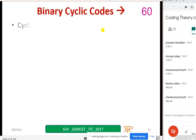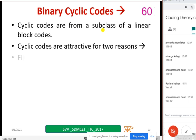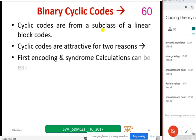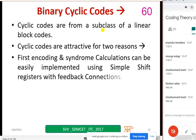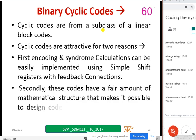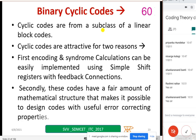Let us go to the next. Cyclic codes are from a subclass of linear block codes. Cyclic codes are attractive because of two reasons. One reason is encoding and the syndrome calculation can be easily implemented using shift registers with some feedback connections. Another advantage or a second reason is these codes have a fair amount of mathematical structure that makes it possible to design with useful error correcting properties. Just read it twice or thrice if you want. You can take one or two lines.